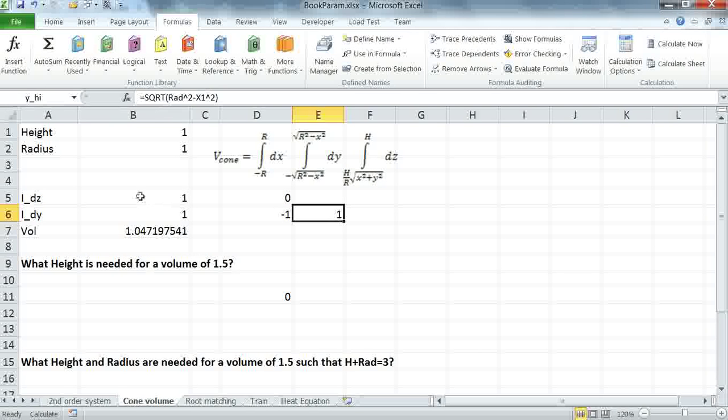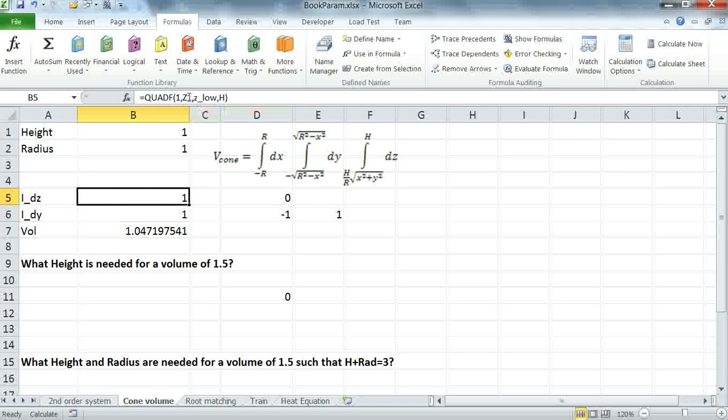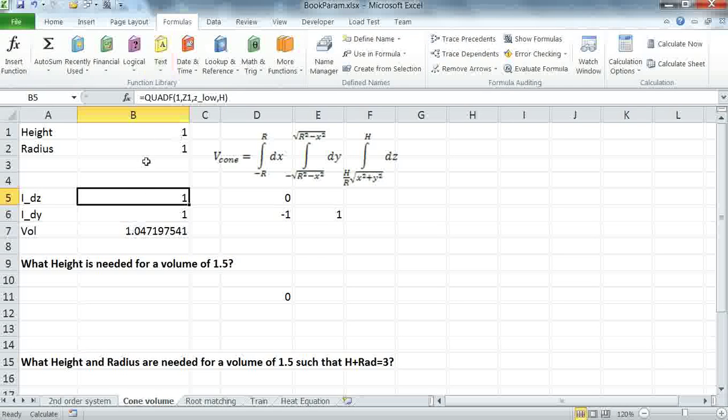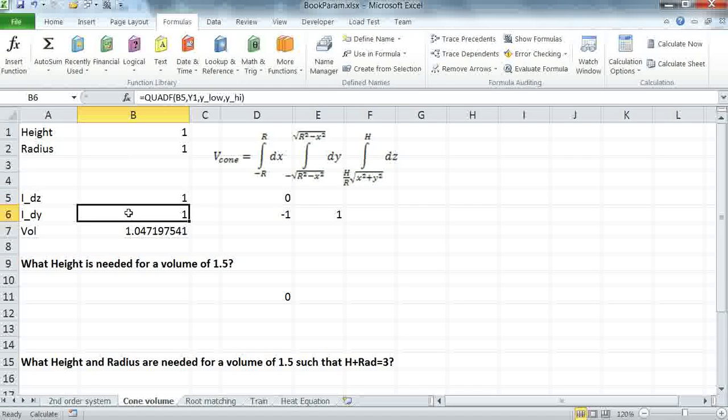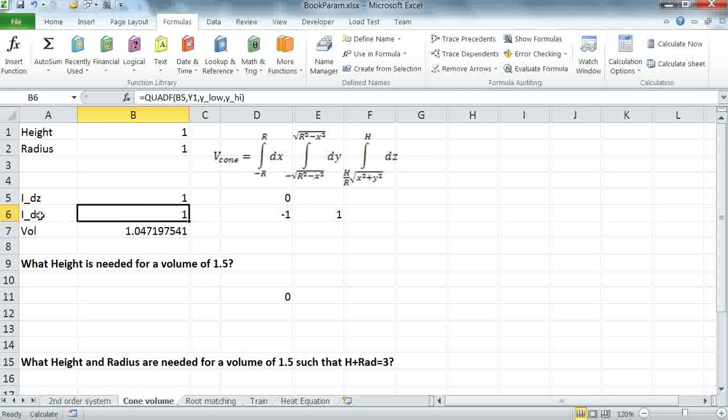To compute this triple integral, we simply define the innermost integral with respect to Z1. My integrand here is 1, so I can just simply pass it as a constant. And I'm passing the limit Z-low to H. Then I pass this entire integrand, which is in B5, to the middle integral, which is defined in B6.